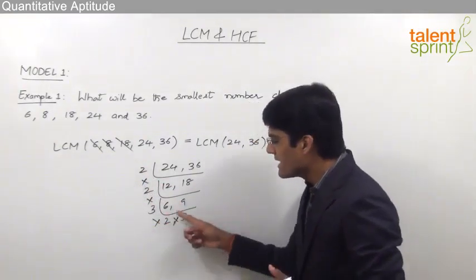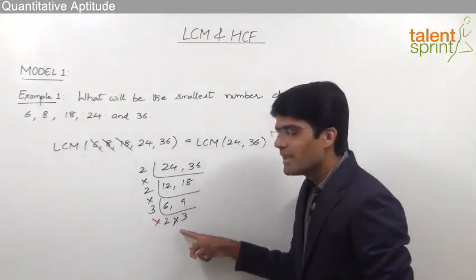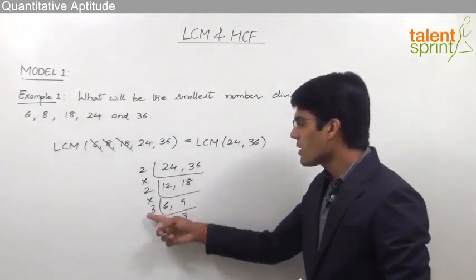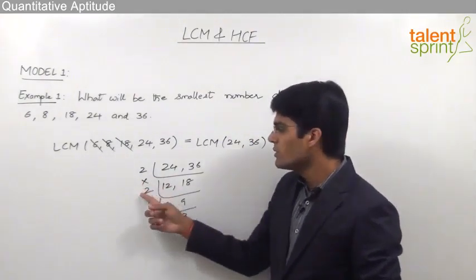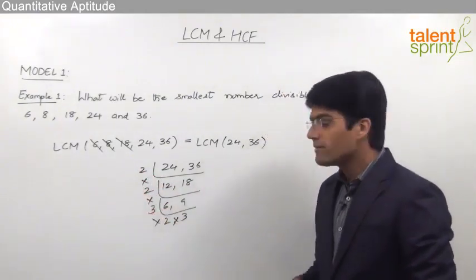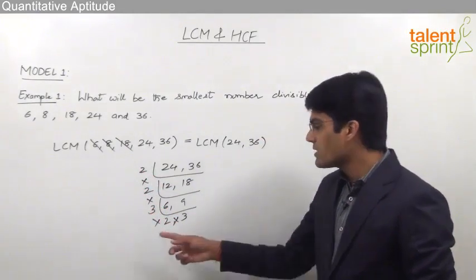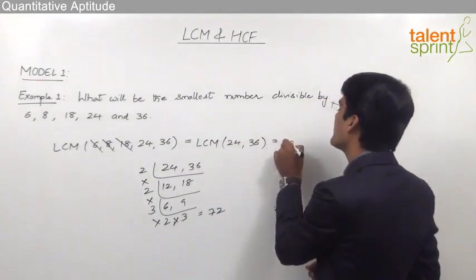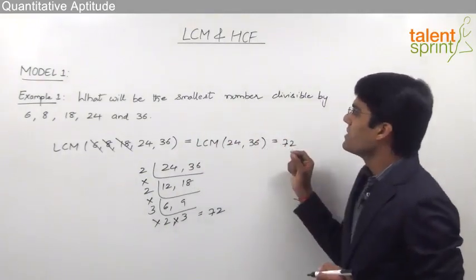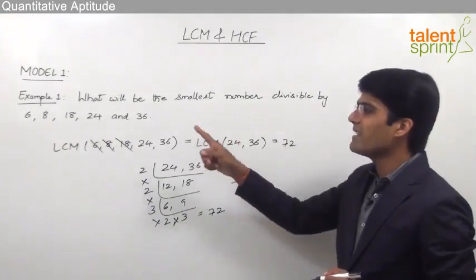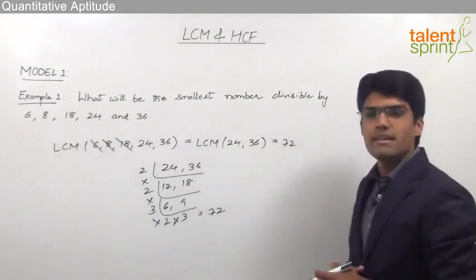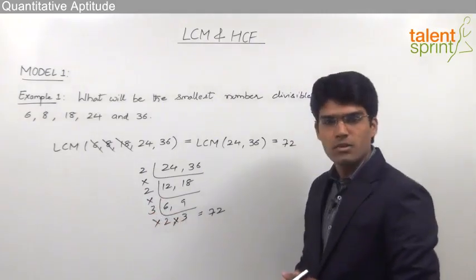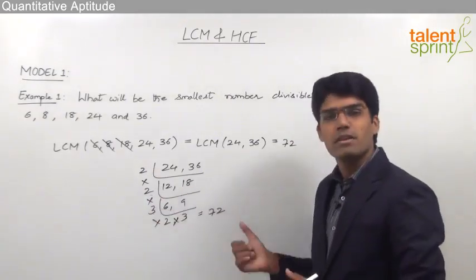We need not waste time writing down the remaining steps of taking 2 and then 1, 3, and then taking 3 and writing 1, 1 — that would be a waste of time. Simply take the product of all the numbers to get the answer. So 2 × 2 = 4, 4 × 3 = 12, 12 × 2 = 24, and 24 × 3 = 72. So the LCM of 24 and 36 is 72, meaning 72 is the smallest number exactly divisible by 6, 8, 18, 24 and 36. This is how we find LCM by taking common factors and multiplying them all.